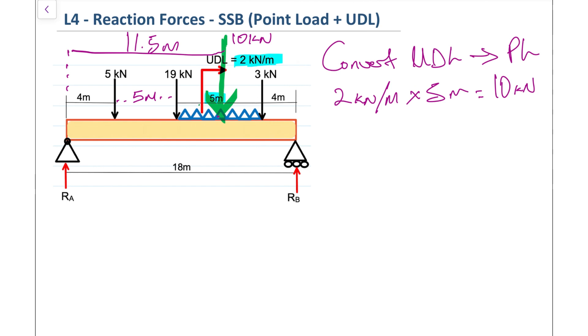Just to reiterate how we got that 11.5: we added that 4 meters with that 5 meters, and the UDL is placed halfway between that 5 meters, so that gives us 2.5. Now that we've got our UDL sorted, we need to find the reaction forces. We're going to use the system where clockwise moments equals counterclockwise moments. Moment is force multiplied by perpendicular distance. We're going to take the turning moment about point RA.